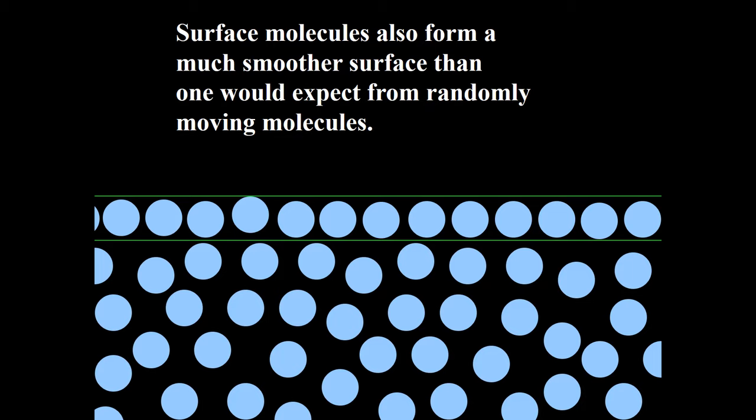Surface molecules also form a much smoother surface than one would expect from randomly moving molecules.